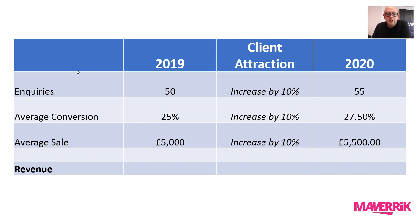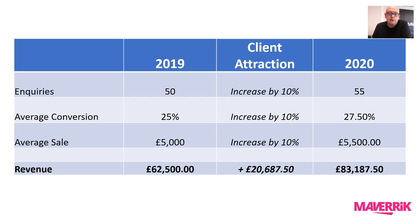So what does this look like in the numbers? We did £62,500 in 2019, and in 2020, doing the same stuff and just improving the conversions, we've gone to £83,187.50 — a £20,687.50 improvement on the same numbers. So it isn't necessarily about massively increasing the output of your sales and marketing; it's about optimising what you've already got. People who implement the client attraction strategy may actually spend very little more than they're doing today, but they will see improved results.